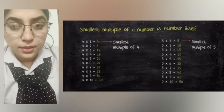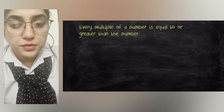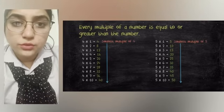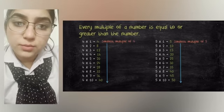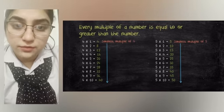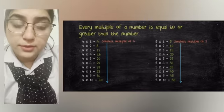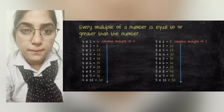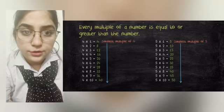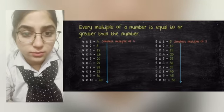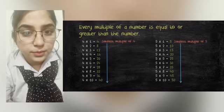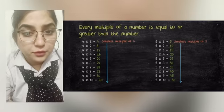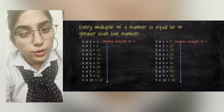The next property is every multiple of a number is equal to or greater than the number. Since the smallest multiple of a number is the number itself, every other multiple will be equal to or greater than the number. For example, multiples of 4 — 8, 12, 16 — are all greater than 4. Similarly, multiples of 5 — 10, 15, 20 — are all greater than 5.